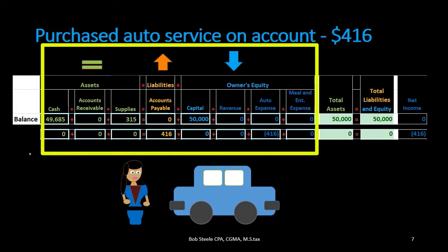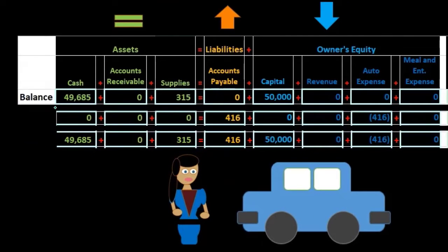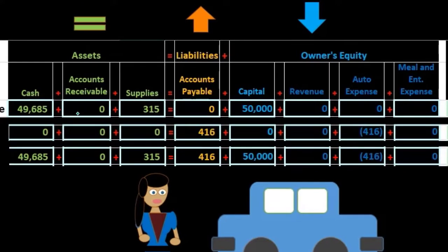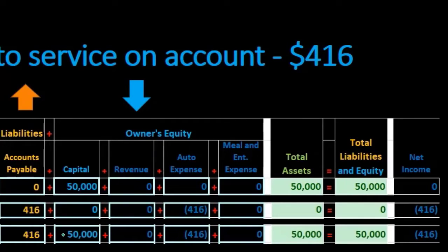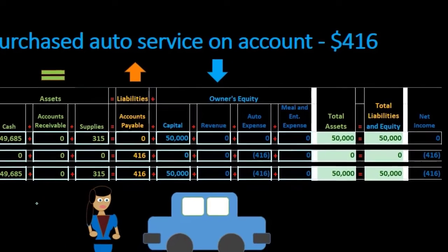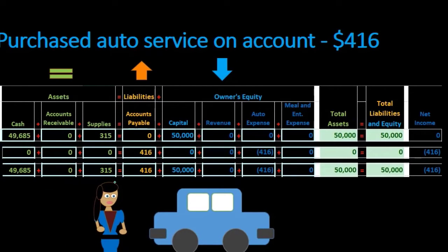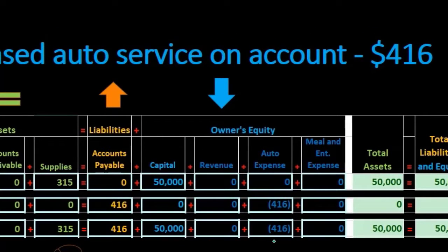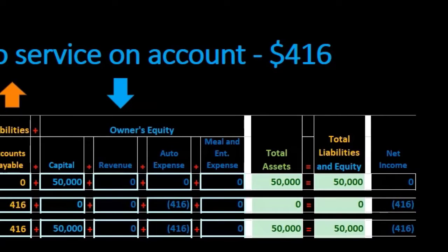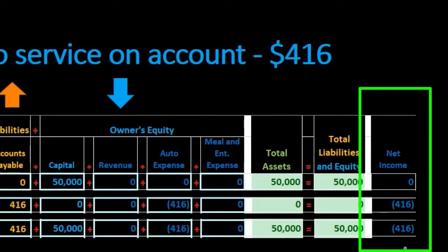Assets remain the same; liabilities increase; equity decreases. Looking at the balances: cash started at $49,685 — nothing happened during this transaction, ending balance $49,685. Accounts receivable nothing before, nothing after. Supplies started at $315, ending at $315. Accounts payable was zero before; we're increasing it by $416 to $416. Capital $50,000 before, nothing happened, still $50,000. Auto expense $416 decrease to equity. Total assets: $49,685 plus $315 equals $50,000. Liabilities and equity: $416 plus $50,000 minus $416 equals $50,000.